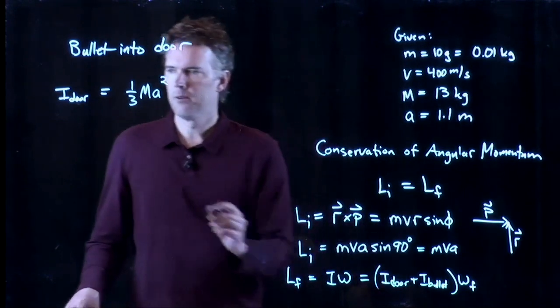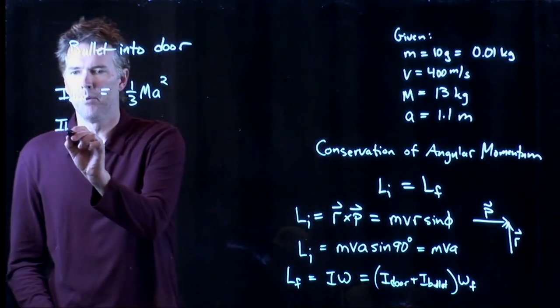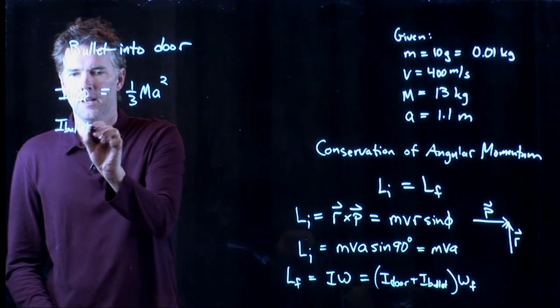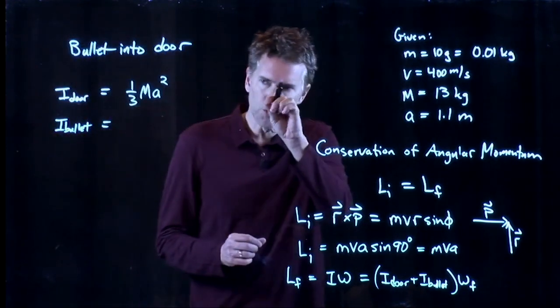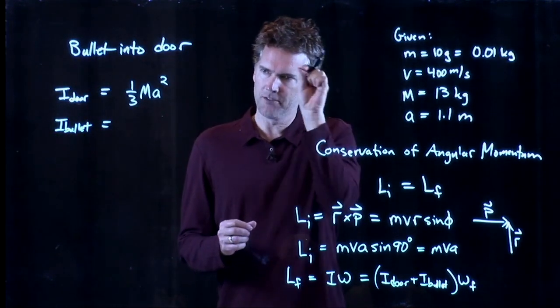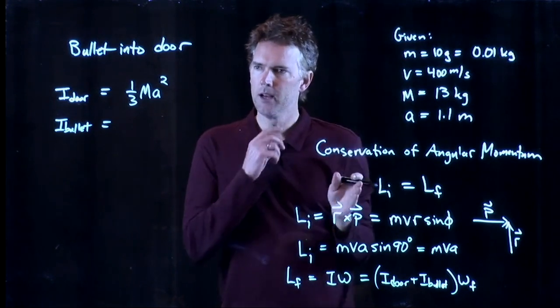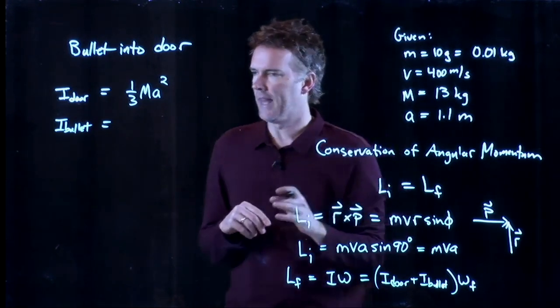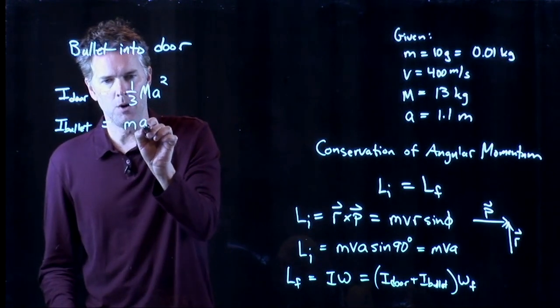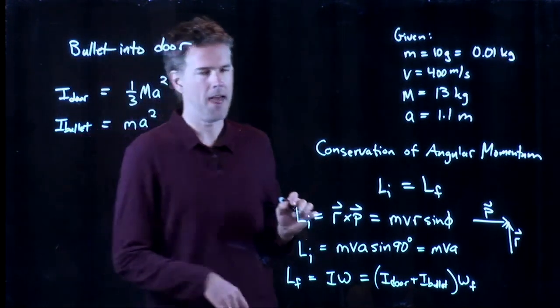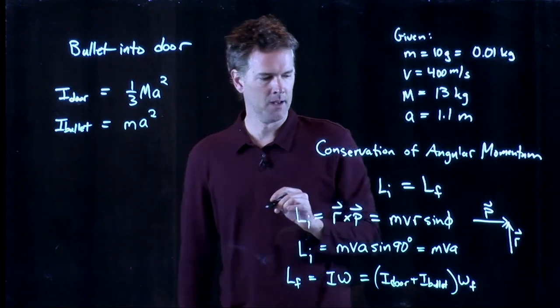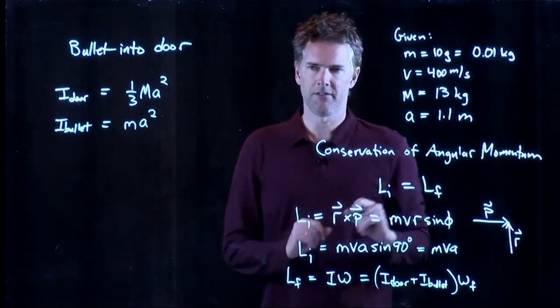We also know that the angular momentum of the bullet, it looks like a particle at the end of a string. It's just a mass at the end of this door. And a particle at the end of a string has moment of inertia of ma squared.